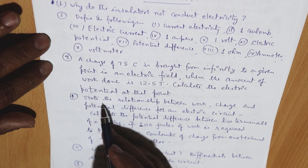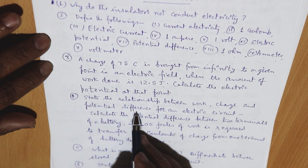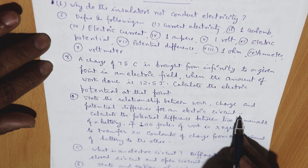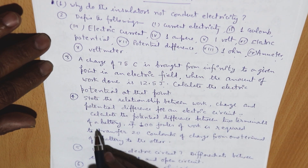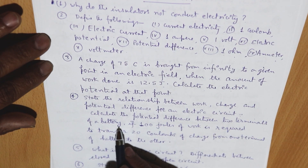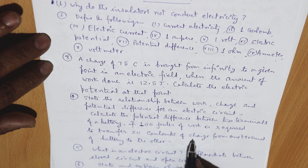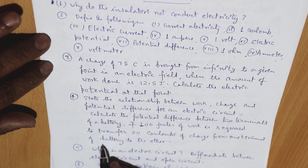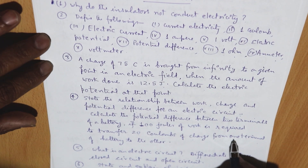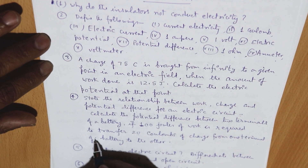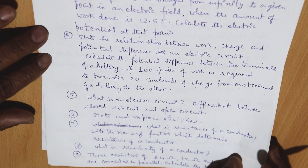Next question: state the relationship between work, charge, and potential difference for an electric circuit. Also calculate the potential difference between two terminals of a battery if 100 joules of work is required to transfer 20 coulombs of charge from one terminal to the other.